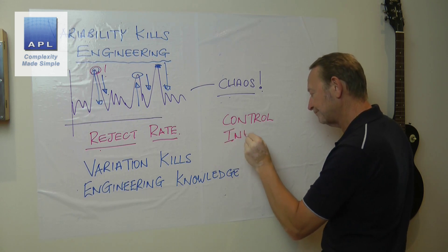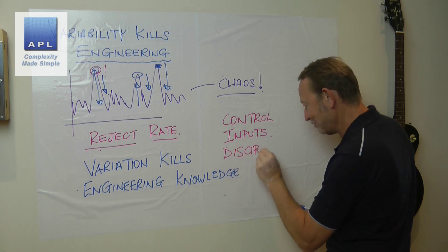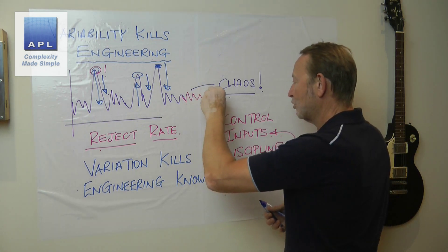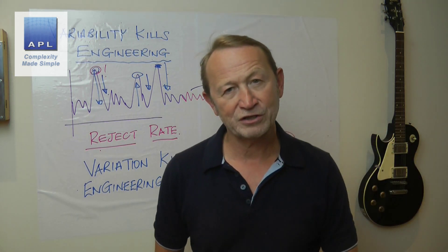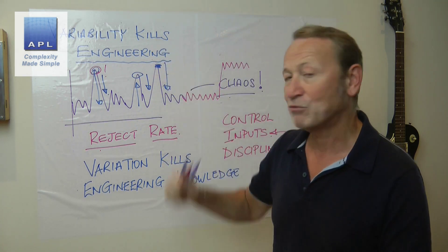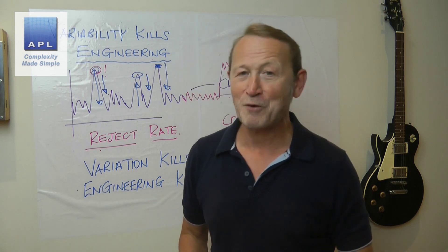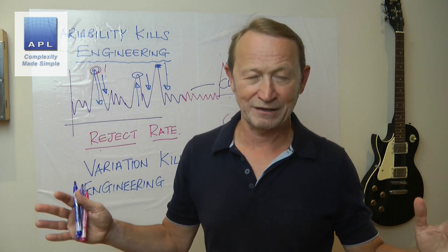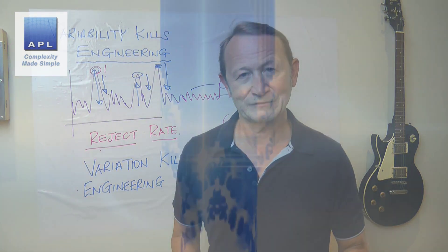It gives you false signals — it makes you think you've done something to the process because you get wild swings up and down. If you've taken an action at one of these peaks, you're going to believe you did that, and therefore you're going to get a superstition. Remove the variability. How do you do this? You have to control inputs to the process. You have to have the discipline to follow those controls. If you do that, you will calm the variability down and put the process on the target you want. But if you leave variability in your process, it will kill your engineering knowledge and you are destined to fix the same problem over and over again, wasting bucketloads of money. Get rid of variability.